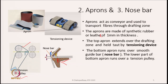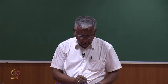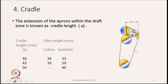The bottom apron is a long apron that moves over a tension pulley, while the top apron is much shorter. These are the nose bars, and from there we move to the next element — the cradle for the top aprons.